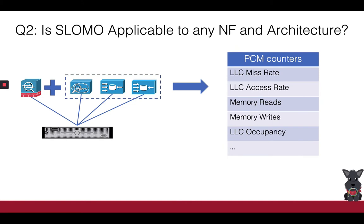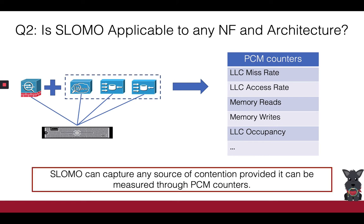The second question is about SlowMo's universality: can SlowMo be used for any NF architecture? Recall that SlowMo quantifies contentiousness by abstracting out the competition using a set of hardware resource utilization counters exposed by PCM. That is a key design decision and a potential limitation of SlowMo, in that potential choke points not monitored by PCM will not be captured. For instance, contention at the NIC, which can potentially be another choke point, will not be taken into consideration by SlowMo.